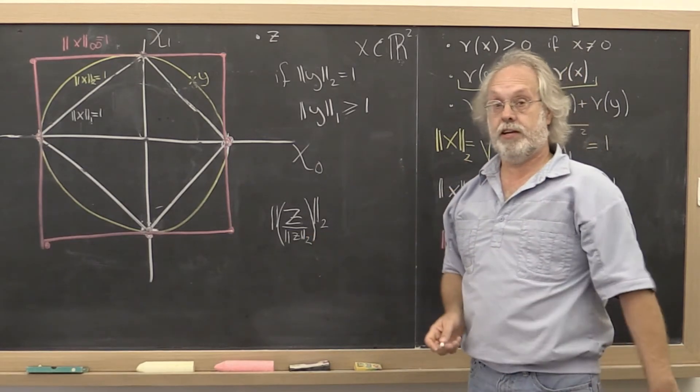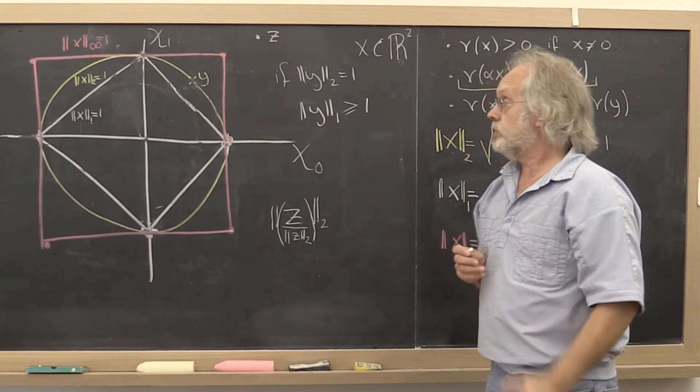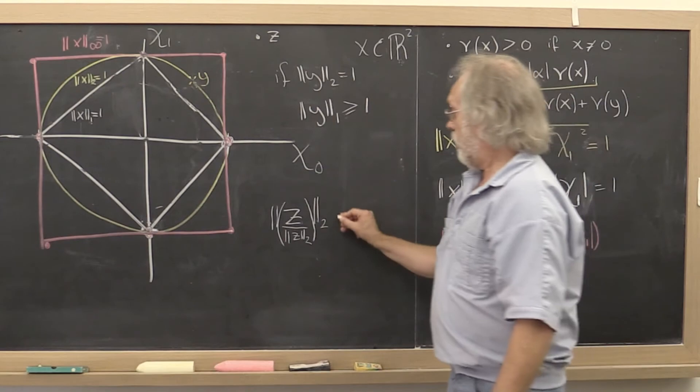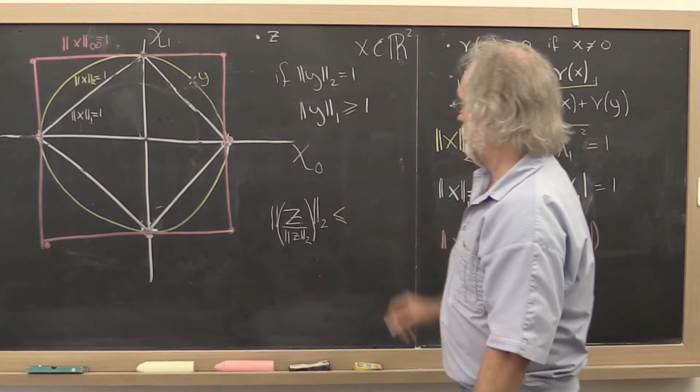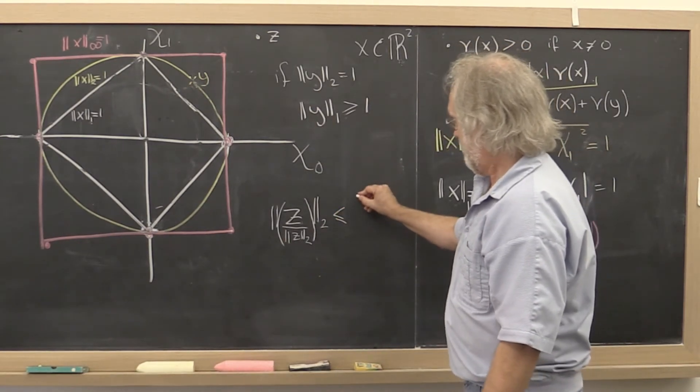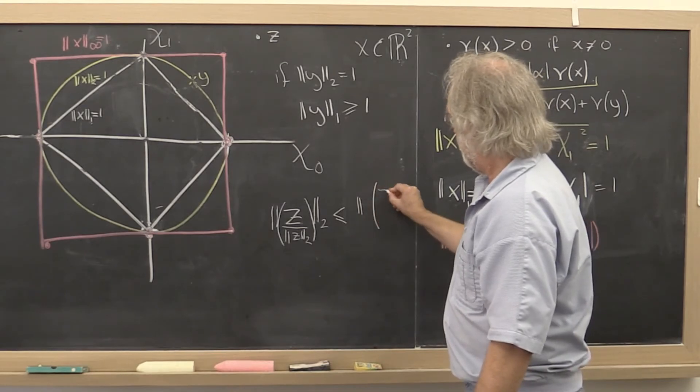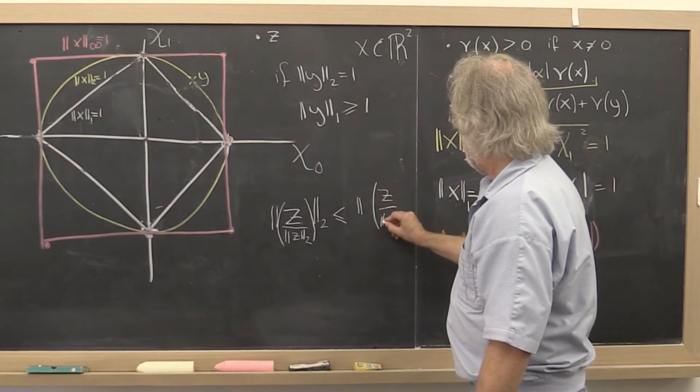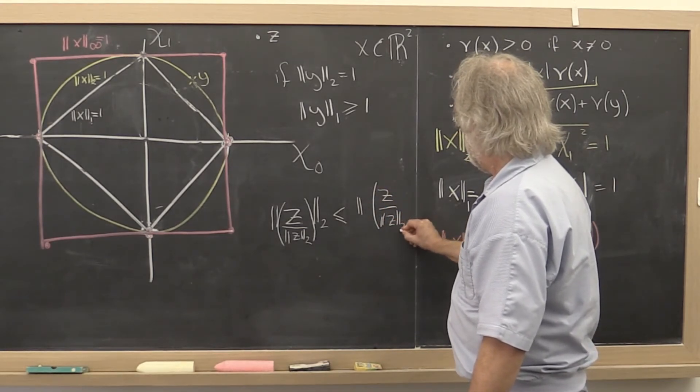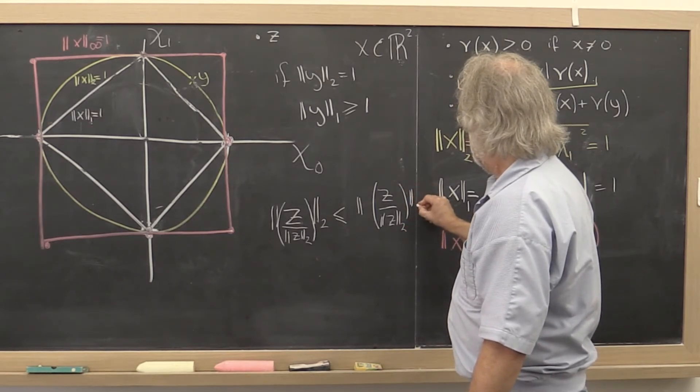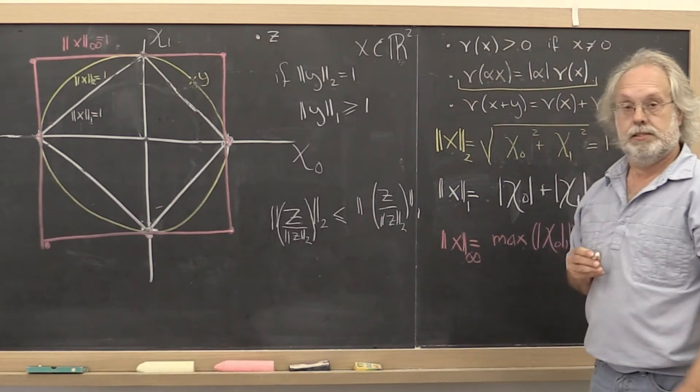Now we have a vector with 2 norm equal to 1. Therefore we know that this is less than or equal to the 1 norm of the vector z divided by the 2 norm of z.